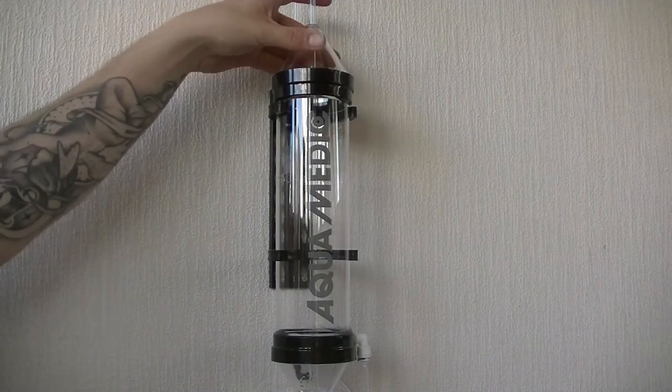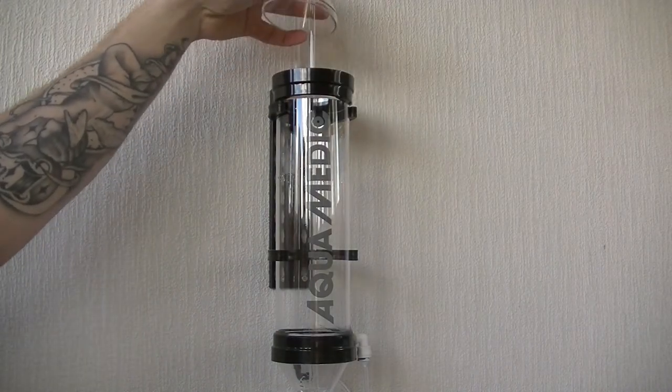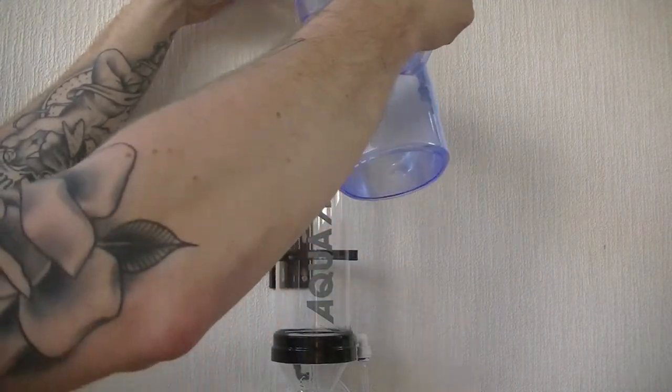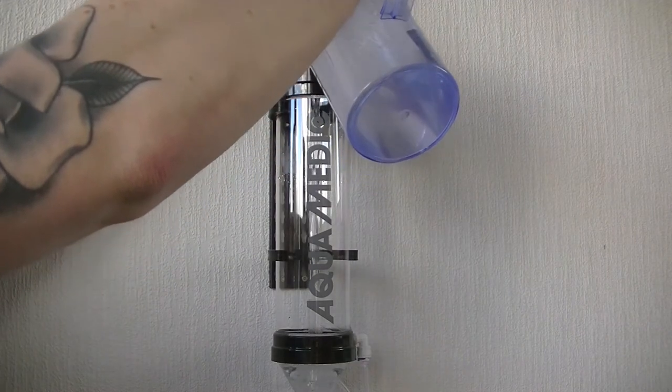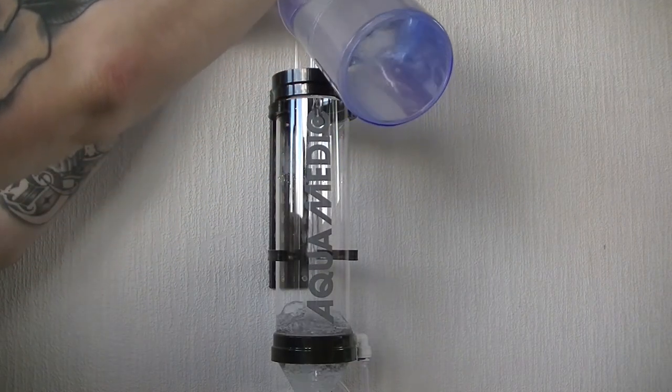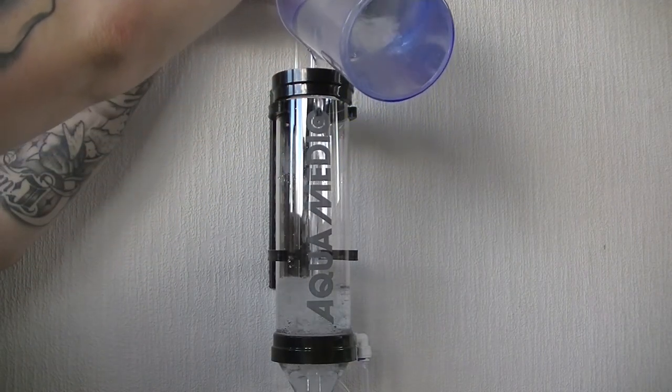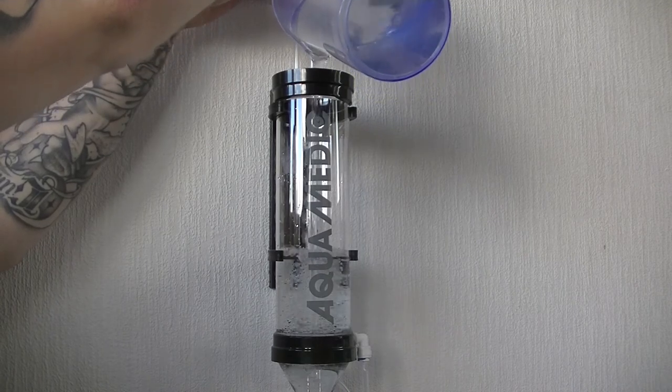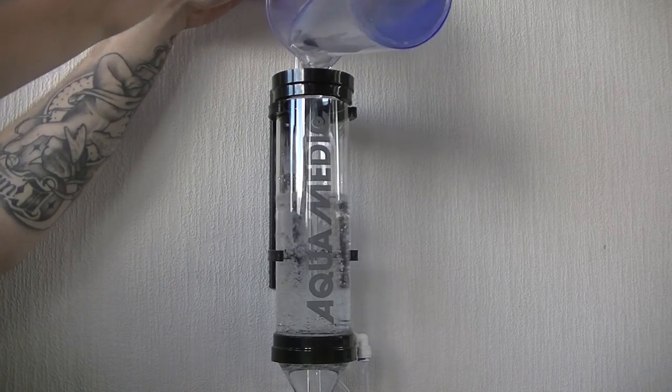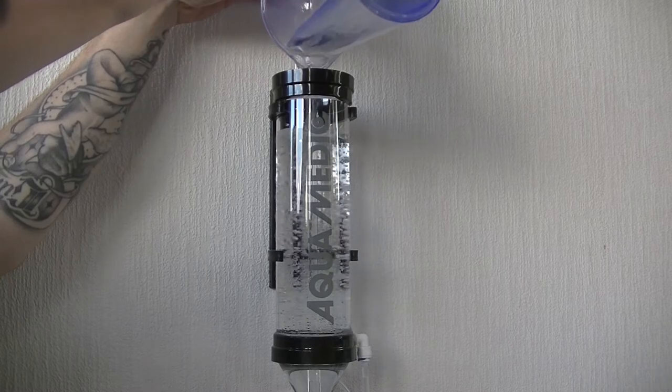Alright so that's it, everything's installed, all the air is in place. As you can see you can take the top of the cone off and fill it with about a liter of water. I already pre-added 35 grams of salt to this water. That's all you need, so basically just make a normal salinity level.